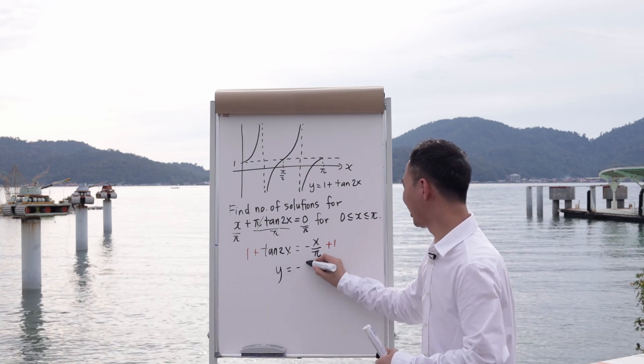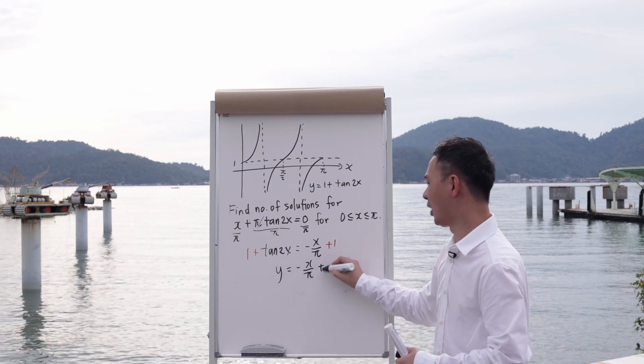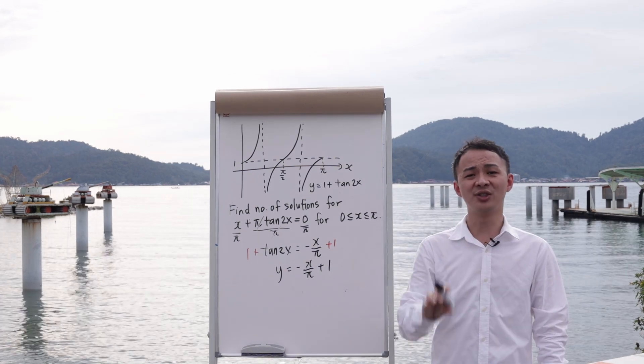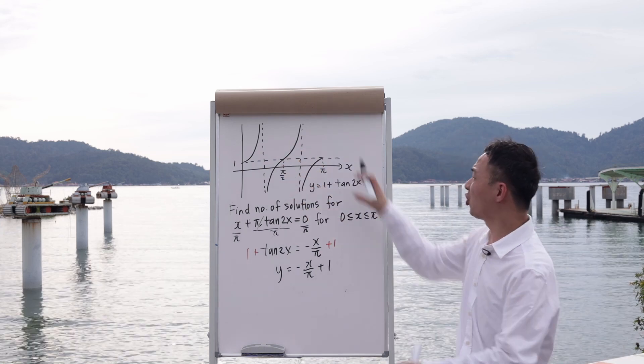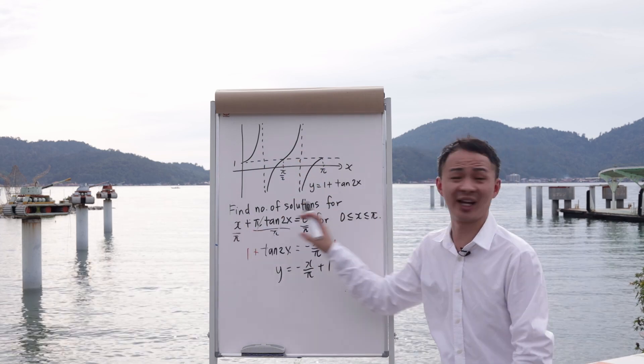So my y equals to negative x over π plus 1. But what you need to do next is you need to be able to draw this straight line on this graph, because you need to join both of them together. This is the reason why you will get this equation.